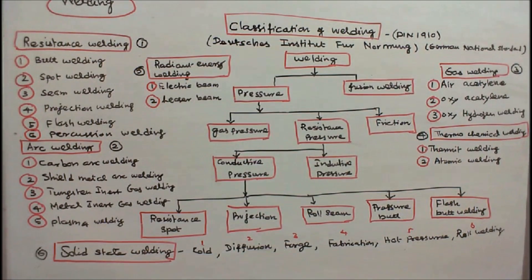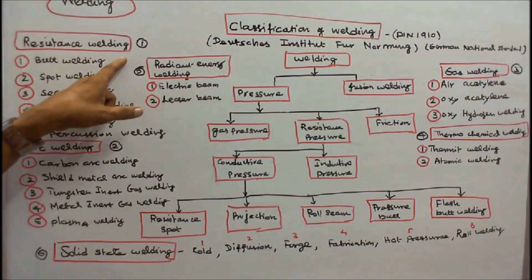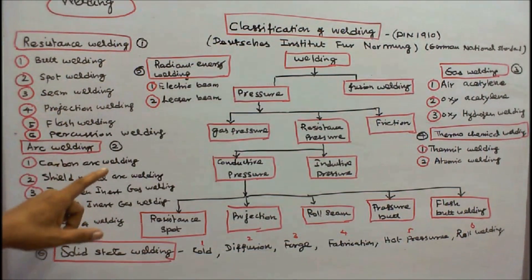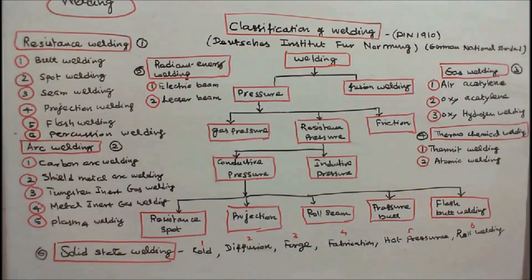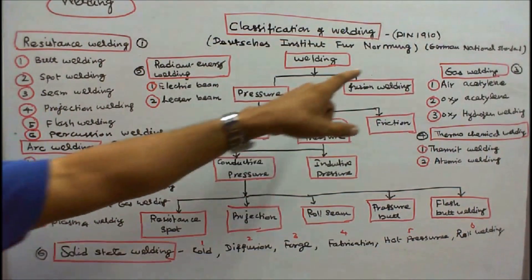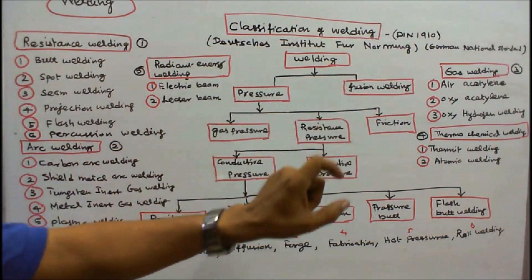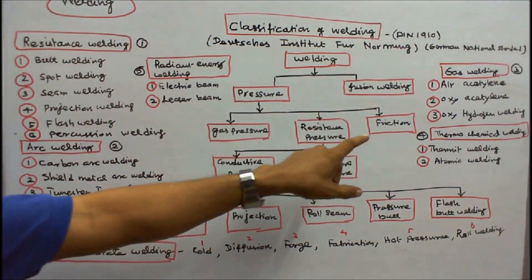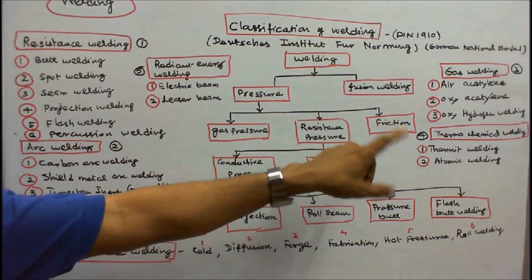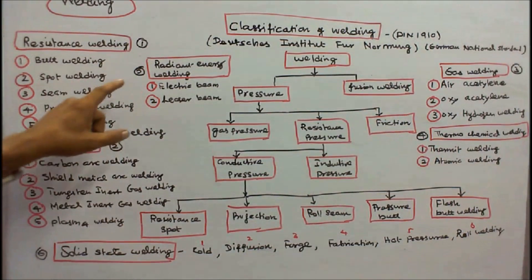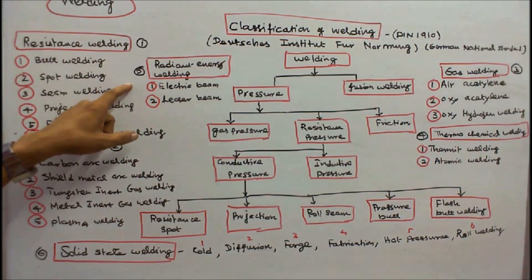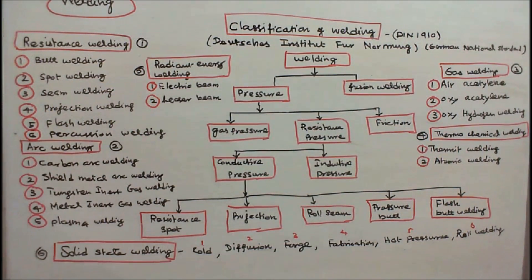In general, welding is classified in six categories: one, resistance welding; second, arc welding; third, gas welding; fourth, thermochemical welding; fifth, radiant energy welding; and sixth, solid state welding.